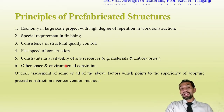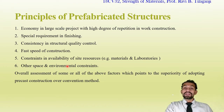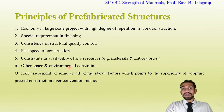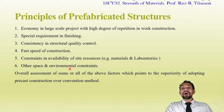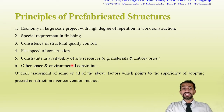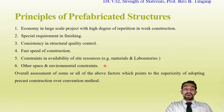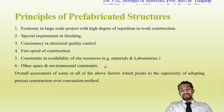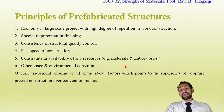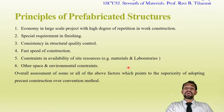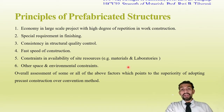Environmental constraints include hilly areas, valleys, forests, watersheds, lakes, rivers, canals, or streamlines near the plant location. Overall, assessment of all these factors points to the superiority of adopting precast construction over the conventional method in many situations.